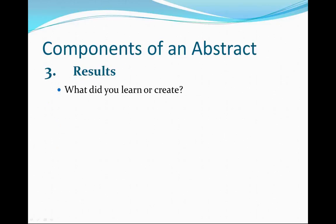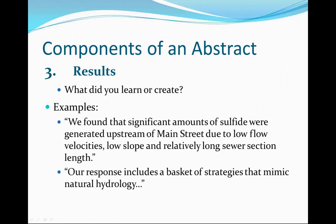You'll also want to use numbers in the results, which is the third component of an abstract. It's important not to wade too much into the details here. What you want to do is summarize your findings as briefly as you can while still addressing the basic problem. Some examples are: 'We found that significant amounts of sulfide were generated upstream of Main Street due to low flow velocities, low slope, and relatively long sewer sections,' or 'Our response includes a basket of strategies that mimic natural hydrology.' This is fine as long as you keep it within the 300-word limit.